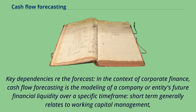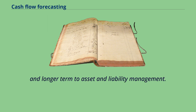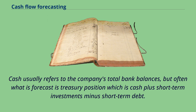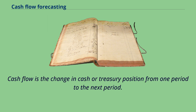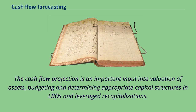In the context of corporate finance, cash flow forecasting is the modeling of a company or entity's future financial liquidity over a specific time frame. Short-term generally relates to working capital management, and longer-term to asset and liability management. Cash usually refers to the company's total bank balances, but often what is forecast is the treasury position, which is cash plus short-term investments minus short-term debt. Cash flow is the change in cash or treasury position from one period to the next. The cash flow projection is an important input in the valuation of assets, budgeting, and determining appropriate capital structures in LBOs and leveraged recapitalizations.